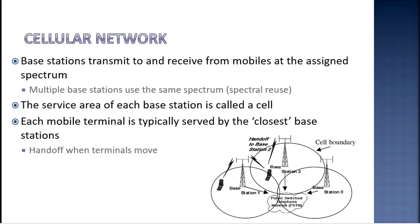So these cells — coverage areas — join together to form a large coverage area. When users cross from one cell to another, they connect to the nearest base station, which transmits the signals.